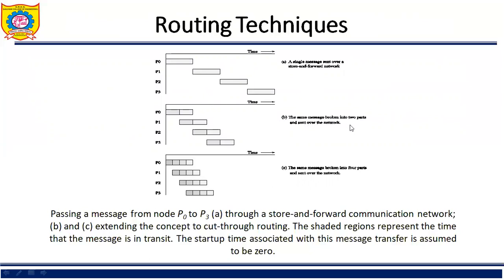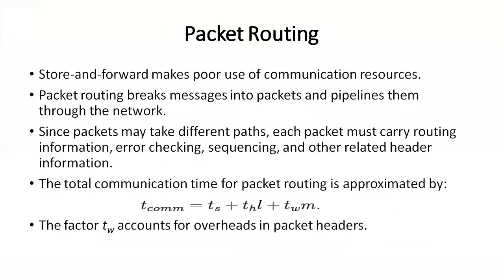The same message can be broken into two parts and sent over the network, as shown in the second figure. The third figure shows the same message broken into four parts and sent over the network. This illustrates message passing from node P0 to P3 through a store-and-forward communication network. Figures B and C extend the concept of cut-through routing — dividing the message among sub-parts. The shaded region represents the time the message is in transit, and the startup time is assumed to be zero.